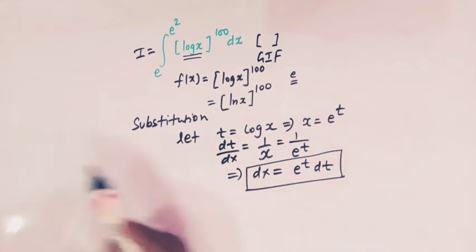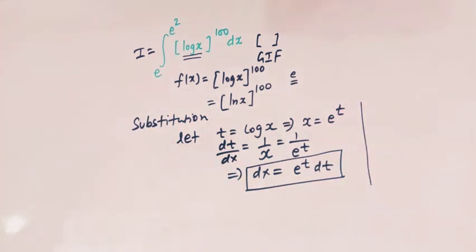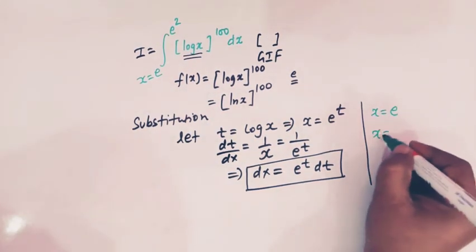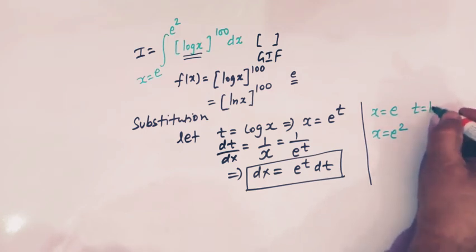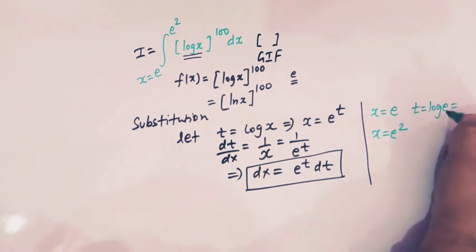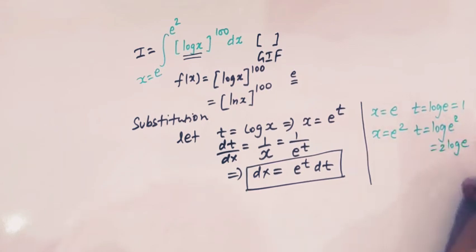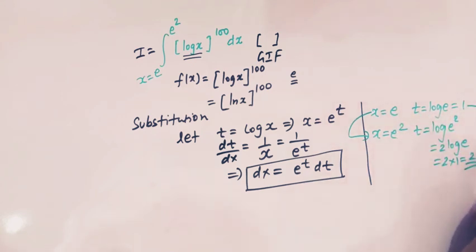Since we have changed the variable from x to t, let us accordingly change the limits. When x is equal to e, the value of t is log of e, and log of e is equal to 1. When x is equal to e-squared, the value of t is log of e-squared, that is 2 log e, and log e is 1, so we have 2. Therefore when x varies from e to e-squared, t varies from 1 to 2.